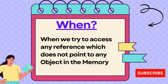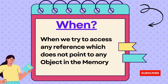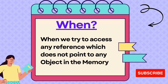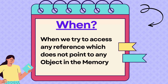The NullPointerException will occur whenever we try to access any reference which does not point to any object in the memory. In simple terms, we are trying to use a variable or an object reference that has not been initialized. This exception falls under the category of unchecked exceptions — those which are not checked by Java at compile time, so there is no mandate to catch and handle it at compile time.